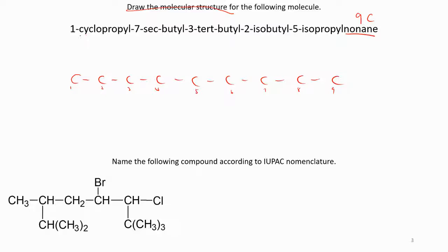One cyclopropyl. Cyclopropyl means cyclic propyl, 3 carbon. So one cyclopropyl, seven sec-butyl. Seven sec-butyl means secondary. Butyl is 4 carbon.